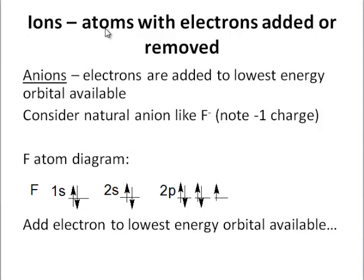Ions are atoms with electrons added or removed. In the case of an anion, you add electrons and the atom acquires a negative charge. Electrons are added to the lowest energy orbital available to make the most stable arrangement.